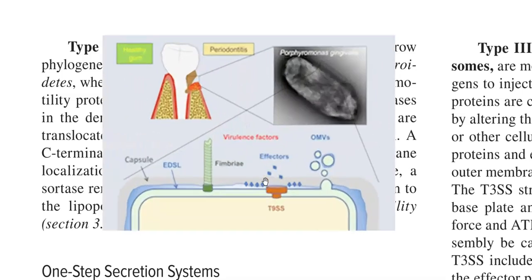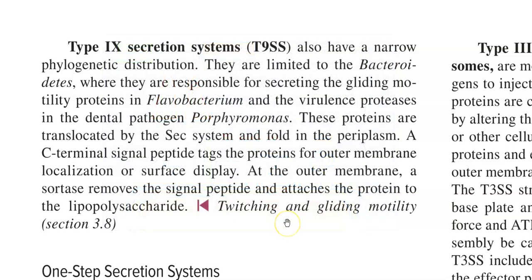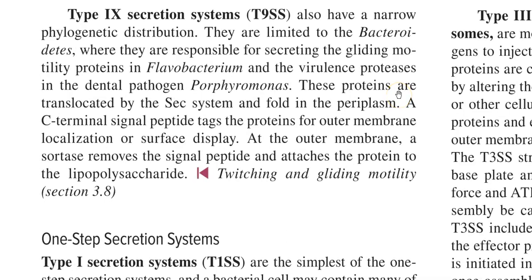Another example is secretion of virulence-related protease enzymes in the dental pathogen Porphyromonas, which is effected through Type 9 secretion. These proteins are first translocated with the help of the Sec system and folded in the periplasm. A C-terminal peptide tag defines that the protein needs to be transported to the outer membrane region, where a special enzyme called sortase removes the signal peptide and attaches the protein to lipopolysaccharides.